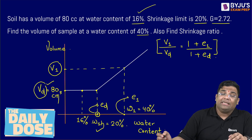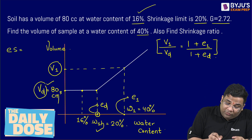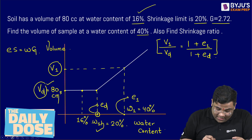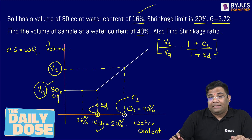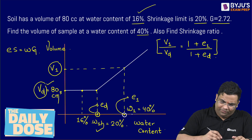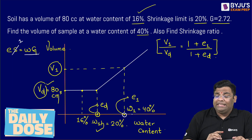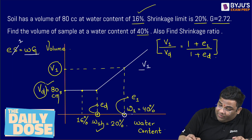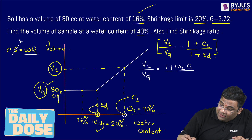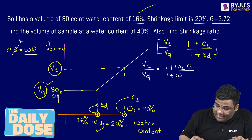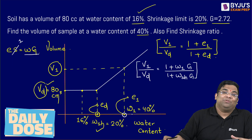The ratio of total volumes equals the ratio of 1 plus E. Now, both at the shrinkage limit and at the water content of 40%, the degree of saturation is 1. So E equals water content into G. Therefore, V1 by VD equals 1 plus W1 times G, divided by 1 plus the shrinkage limit times G. From this formula, we can easily find V1.